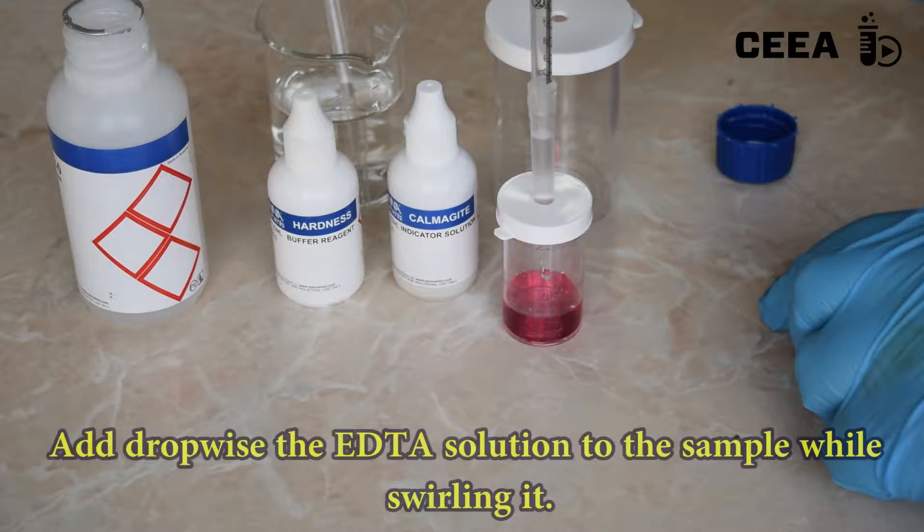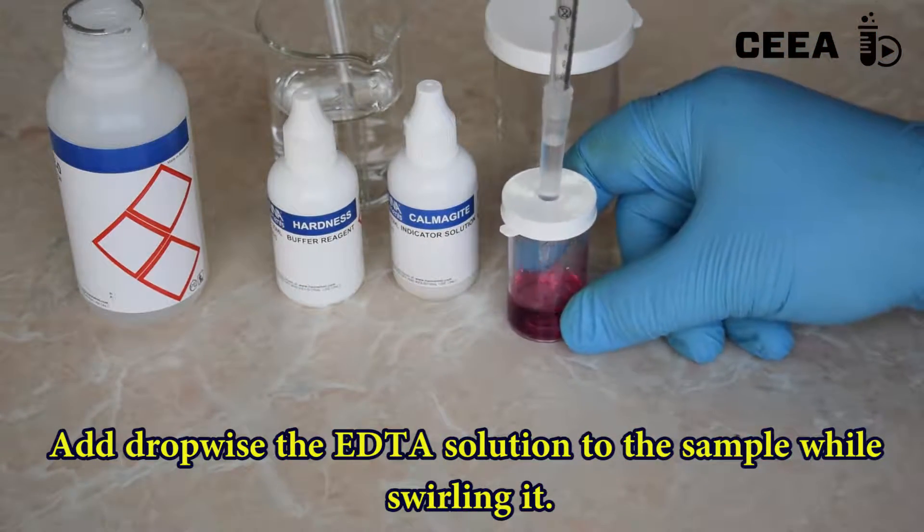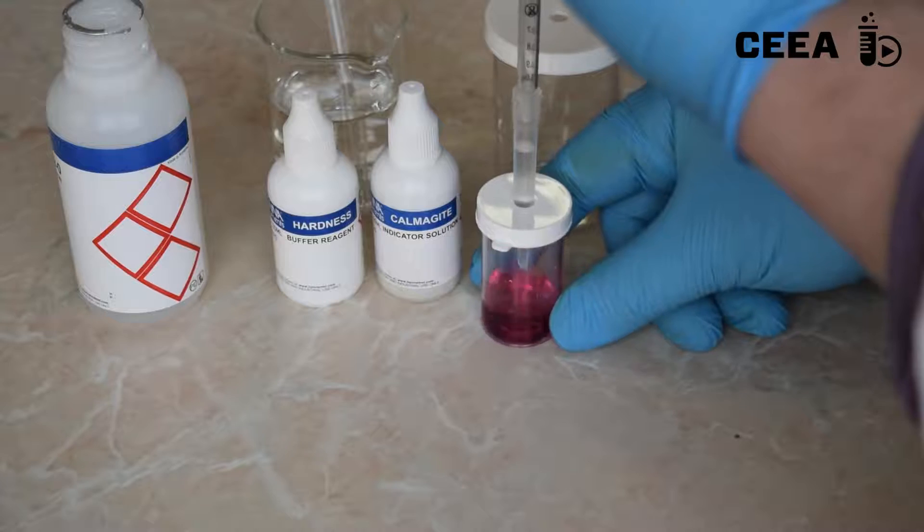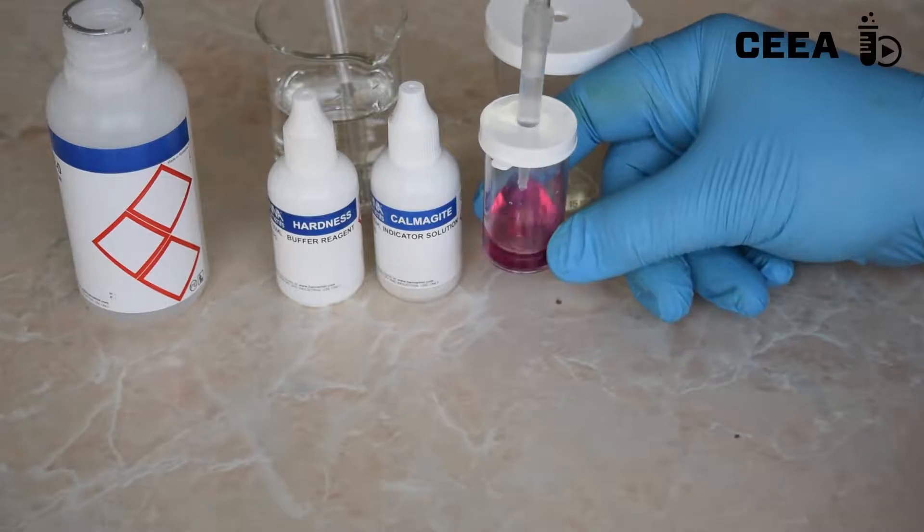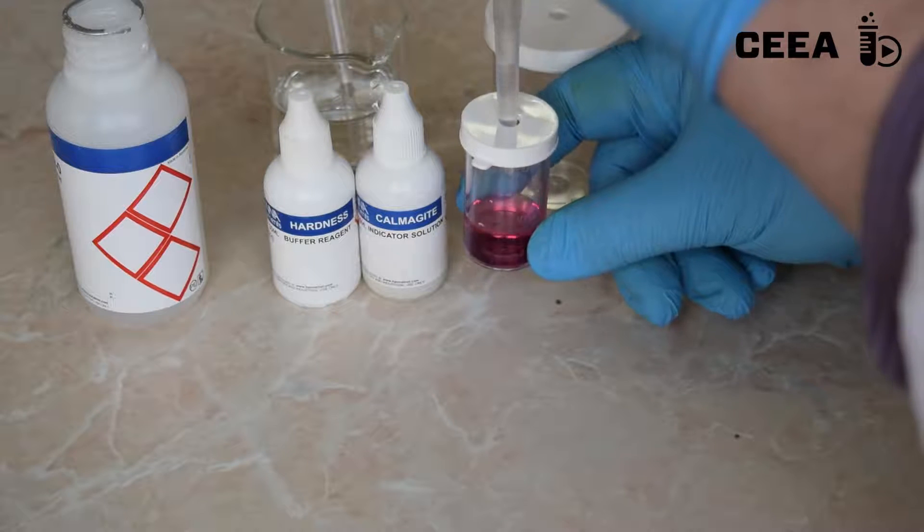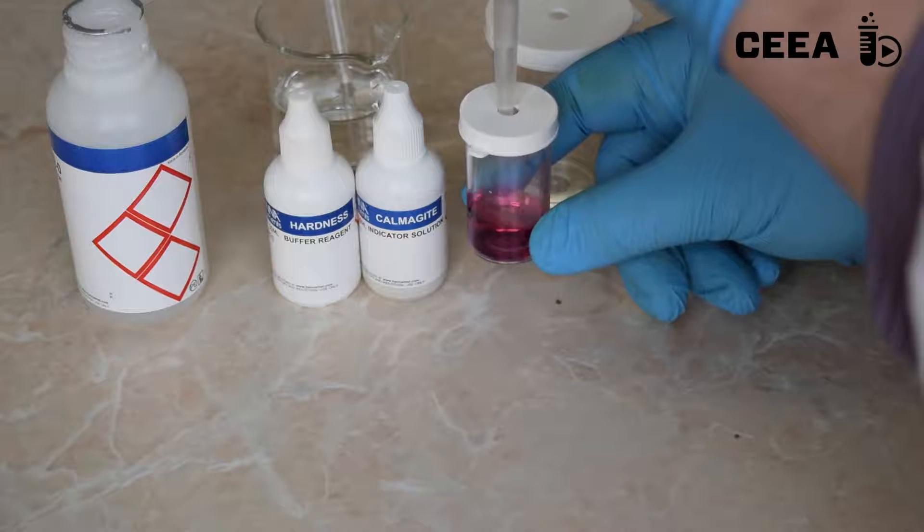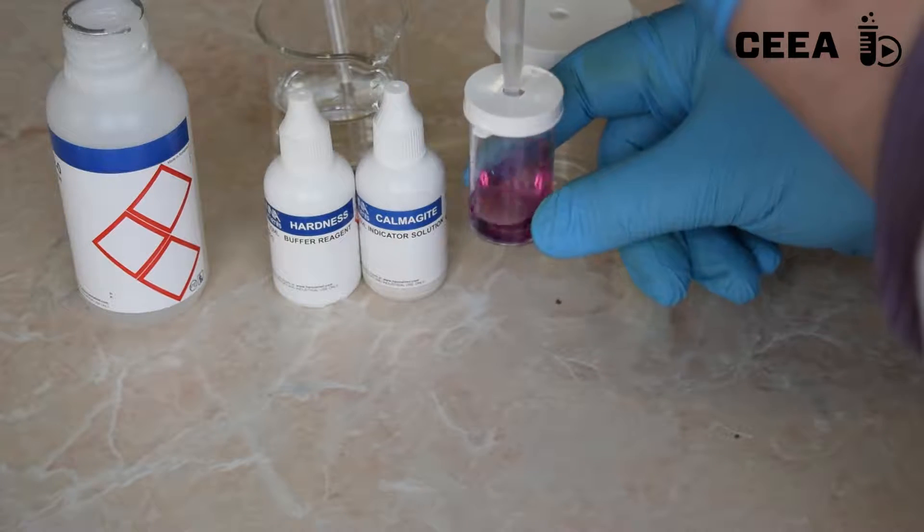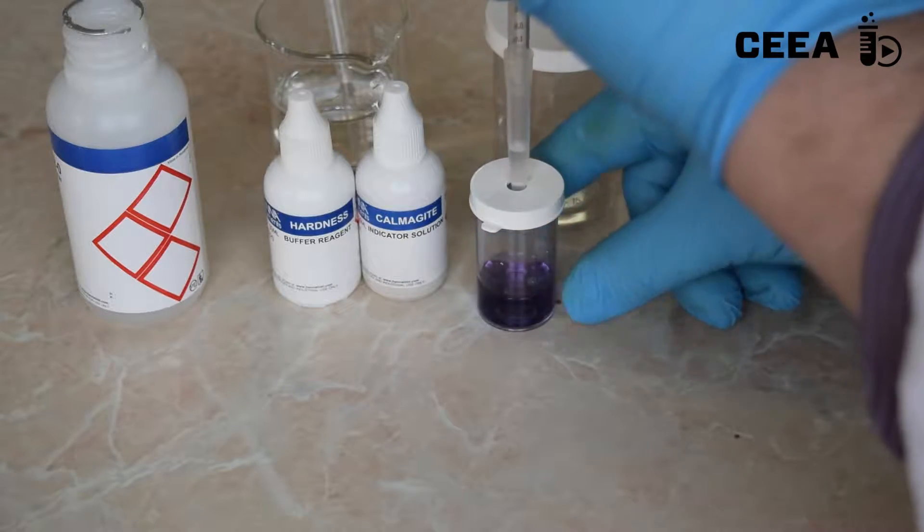The titration is performed with a standardized EDTA solution, which takes out the calcium and magnesium ions from the Kal-Majid complex until the Kal-Majid remains non-complexed and blue. The equivalence point is reached when the solution turns blue.